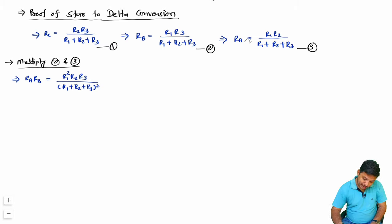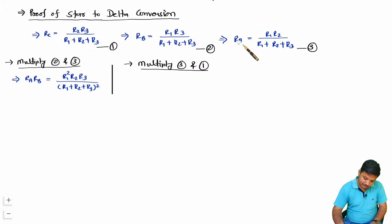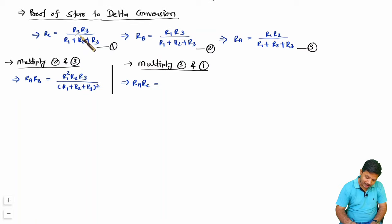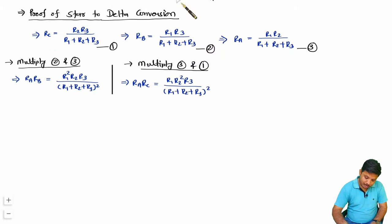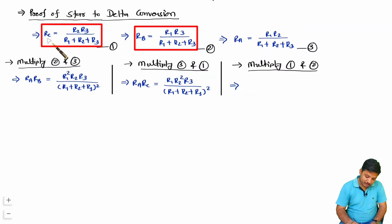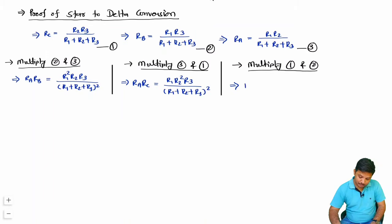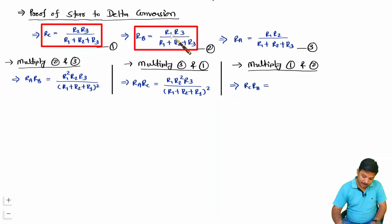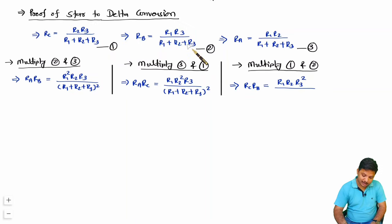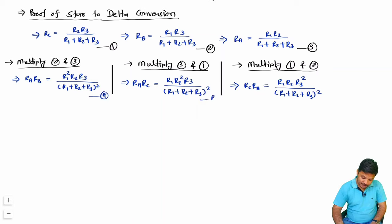Next, multiply equation 3 and equation 1: on the left we get RA·RC, and on the right R1·R2²·R3 divided by (R1 + R2 + R3)² — call this equation B. Then multiply equation 1 and equation 2: left side gives RC·RB, right side gives R1·R2·R3² divided by (R1 + R2 + R3)² — call this equation C.